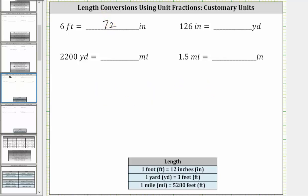Next, we want to convert 126 inches to yards. We begin by writing 126 inches as a fraction with a denominator of one. There's not a direct conversion from inches to yards. We can use the conversion one foot equals 12 inches to convert inches to feet, and then use the conversion one yard equals three feet to convert feet to yards. Because we have to use two conversions, we have to multiply by two unit fractions.